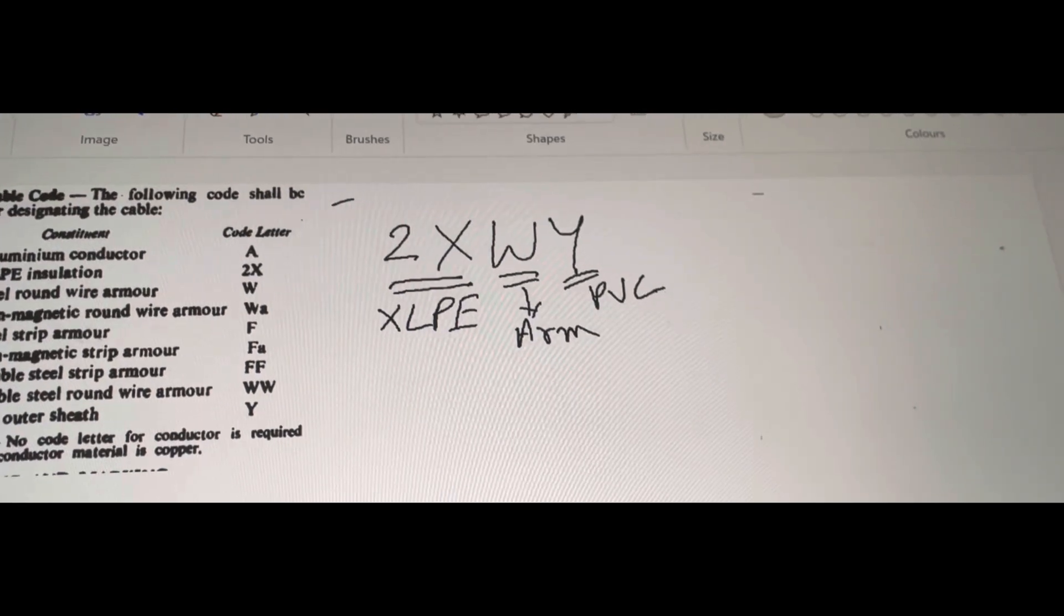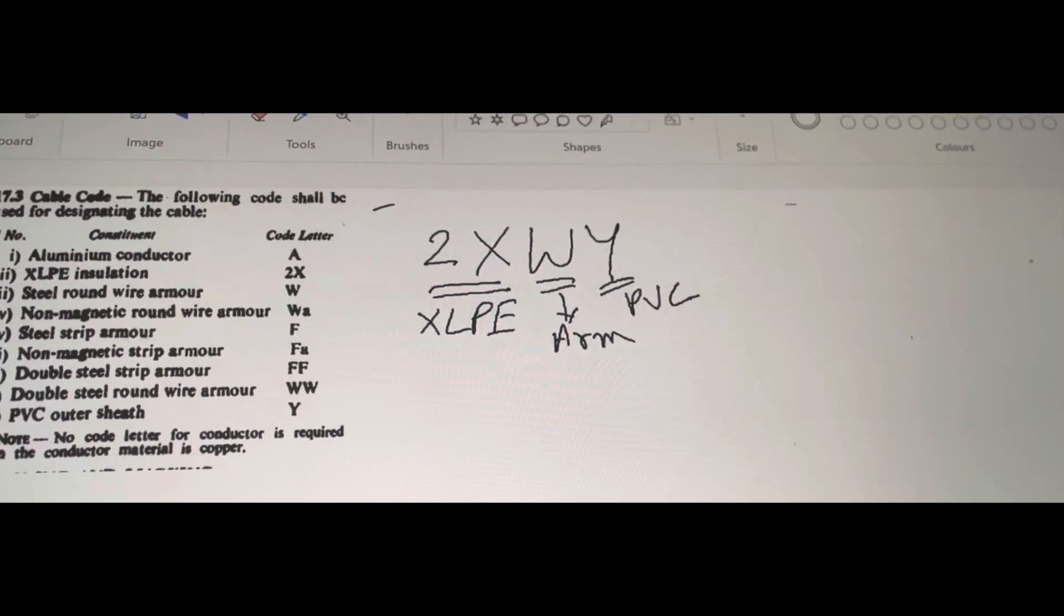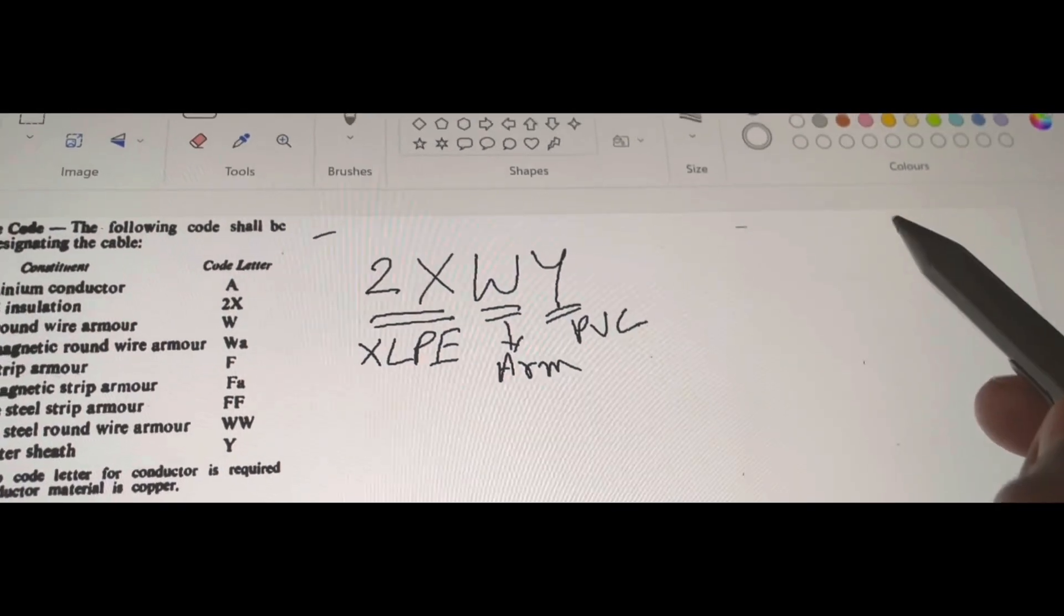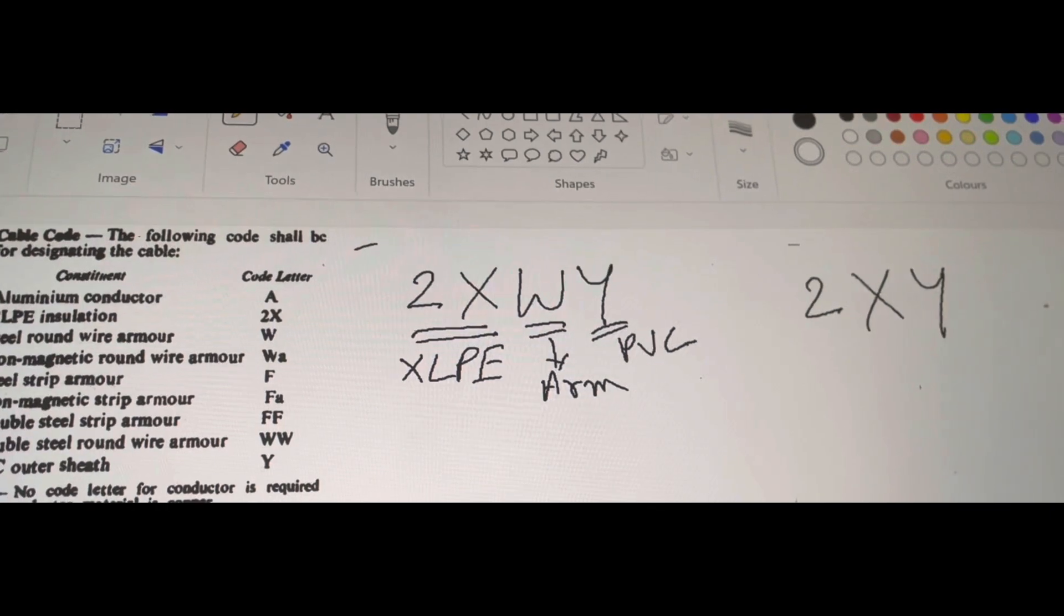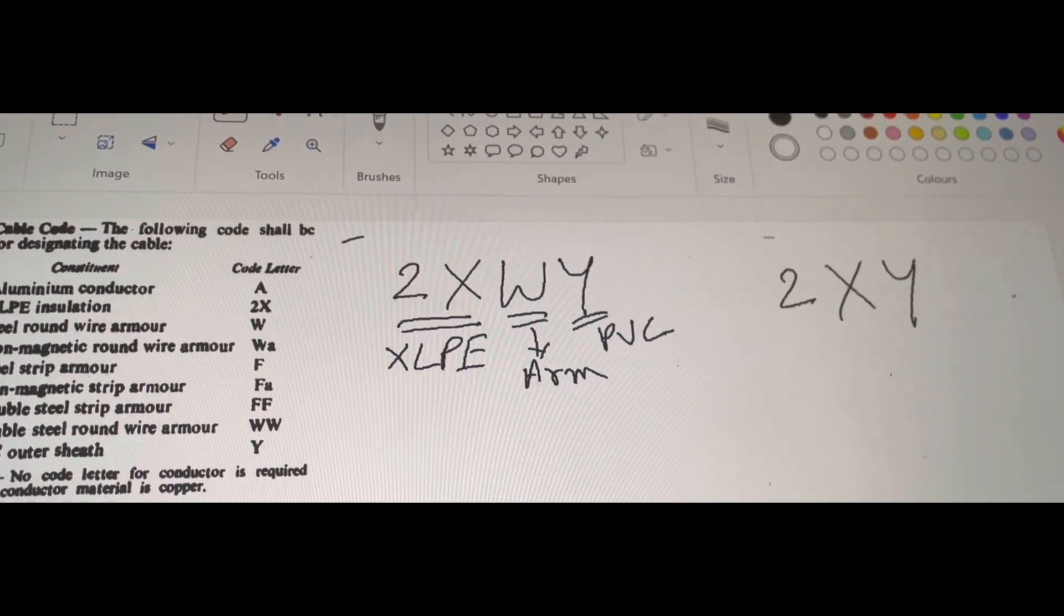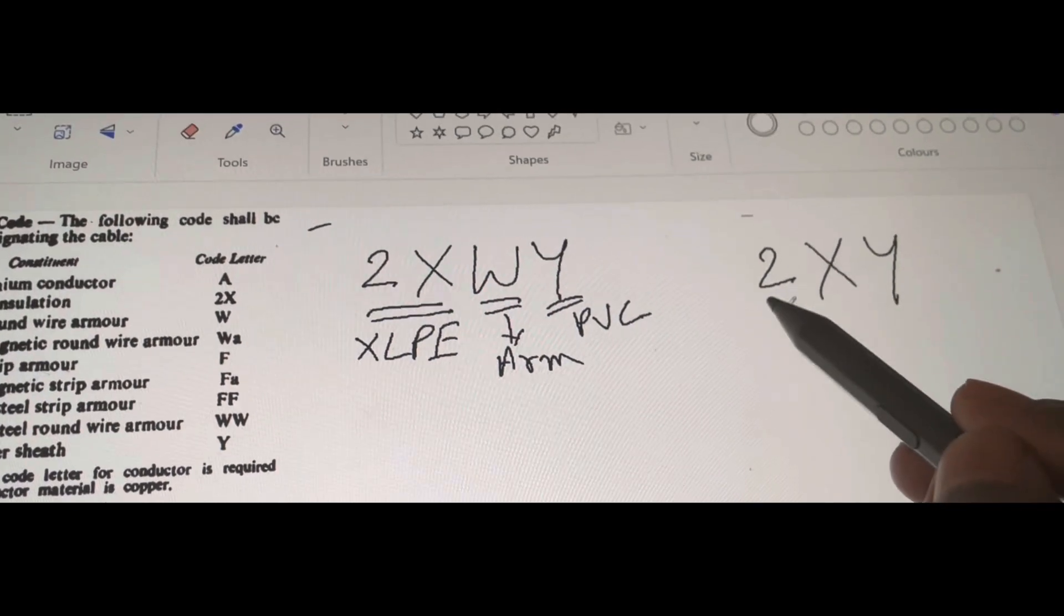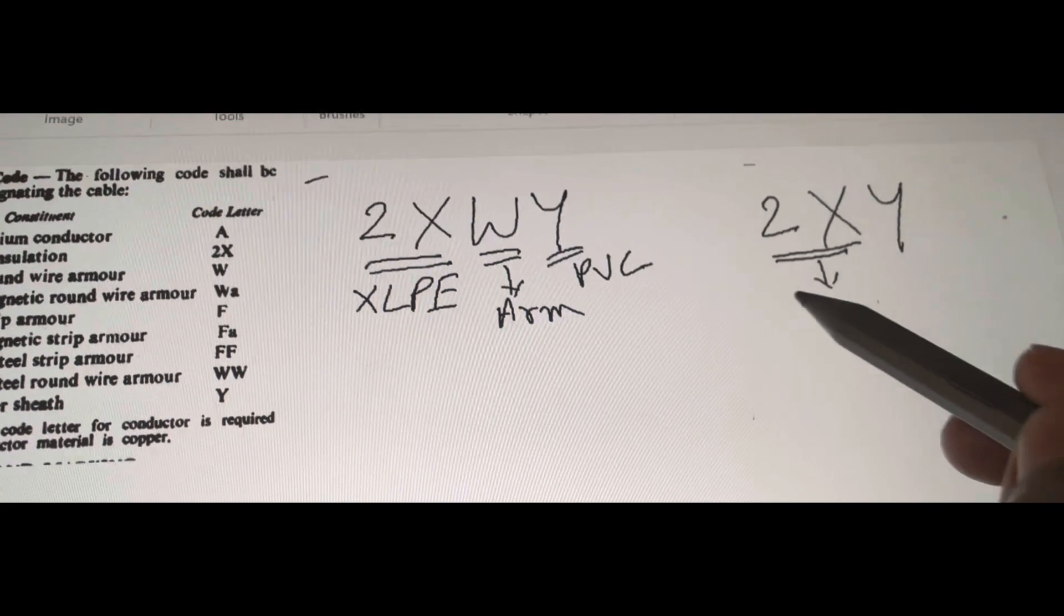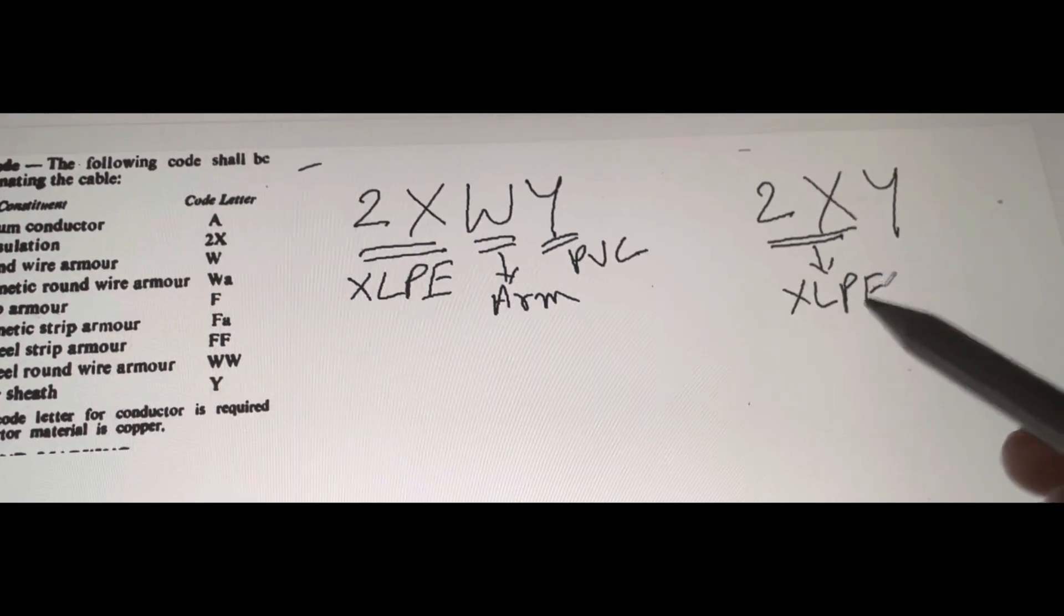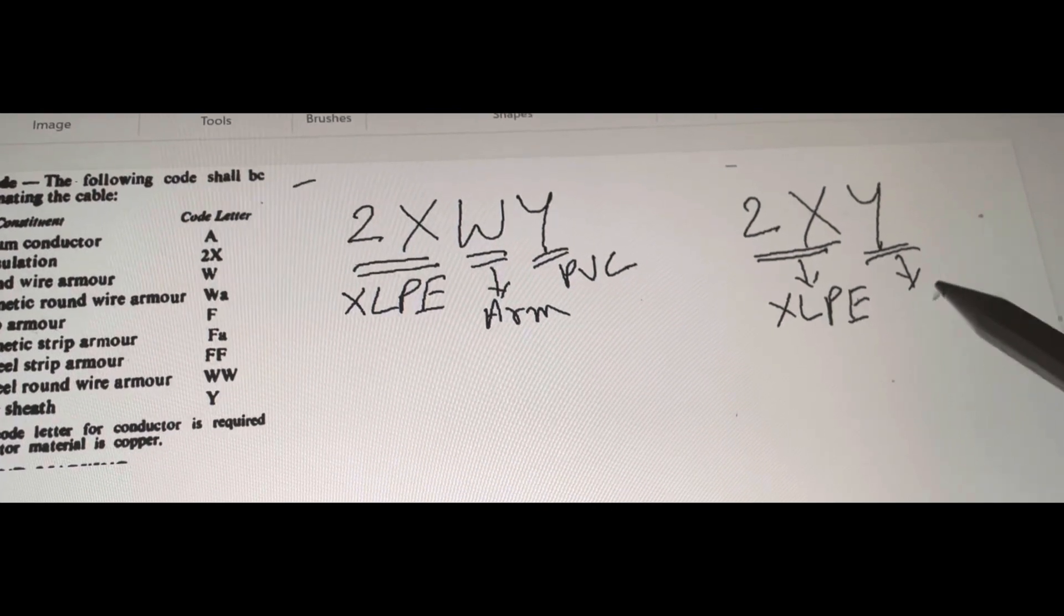In the same way, let us take another cable and assume that there is a code called 2xy. The code printed on that particular cable is 2xy. The meaning is 2x indicates that the insulation material is cross-linked polyethylene XLPE and y denotes the outer sheath is PVC.